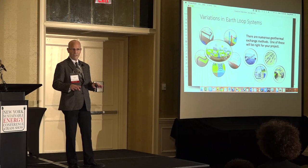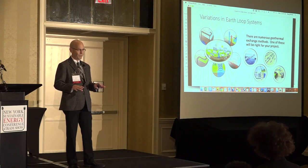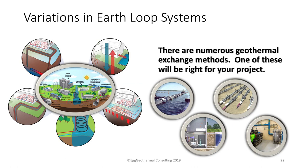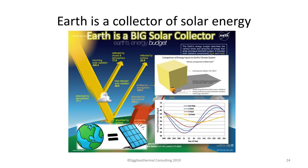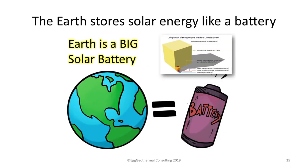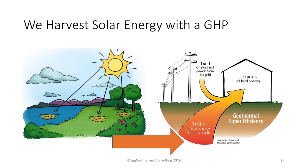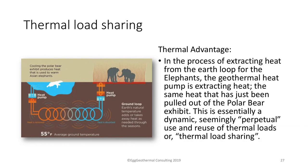There are many variations in geothermal exchange — that's an eight-hour conversation on its own. The key energy source: 49% of the energy that strikes the atmosphere is absorbed by land and surface waters. The earth is a great big solar energy battery — we are essentially using a solar energy heat pump. When doing geothermal, you can share energy between multiple buildings and purposes. In a zoo, heat extracted from the polar bear exhibit can go to heat the elephant exhibit. The same thing happens in communities like YMCAs.